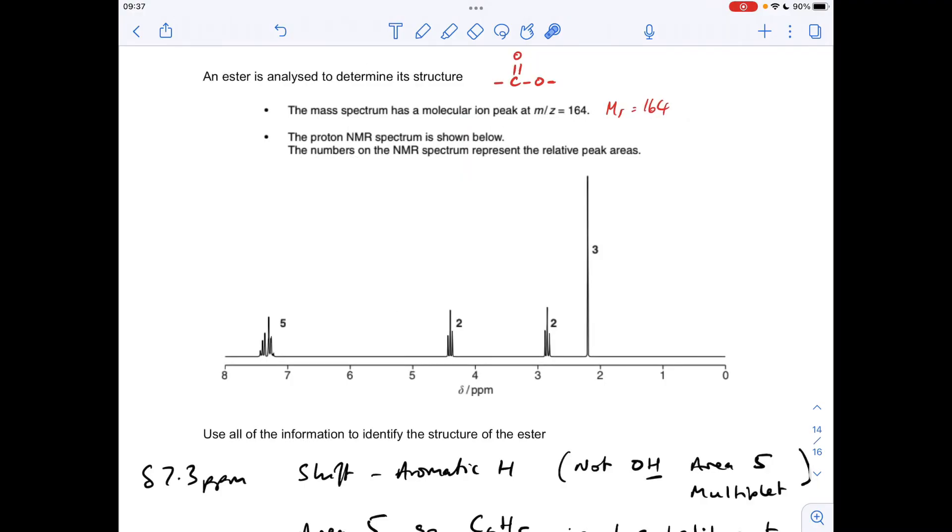So if we move on to the final signal we've got, I'm saying this one's at delta 2.2 ppm, it's a singlet, so there are no adjacent hydrogens to the ones causing this signal. The area of 3 is telling us that it's a CH3 group that's causing the signal, and the shift value is H to C to C double bond O. So it's obviously on this side of the ester group that we have drawn it, so we must have a CH3 group bonded here.